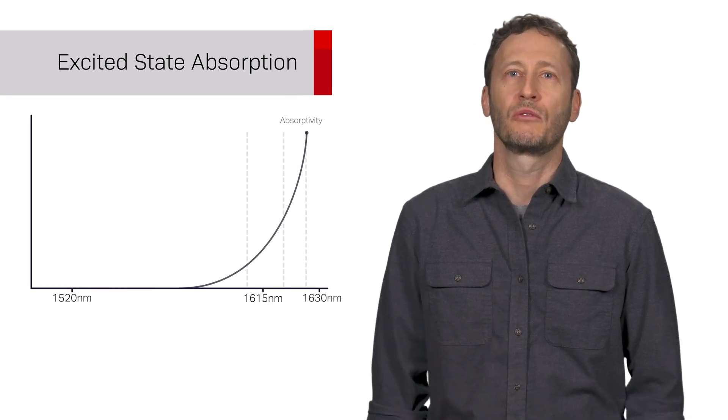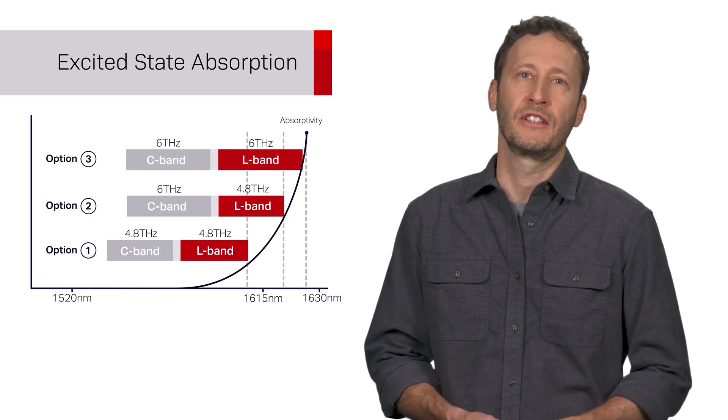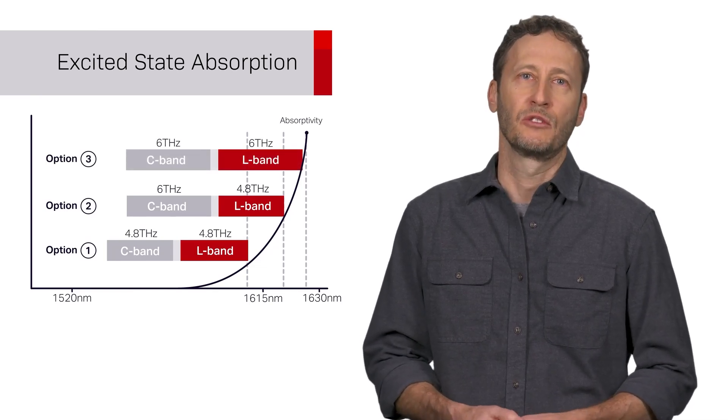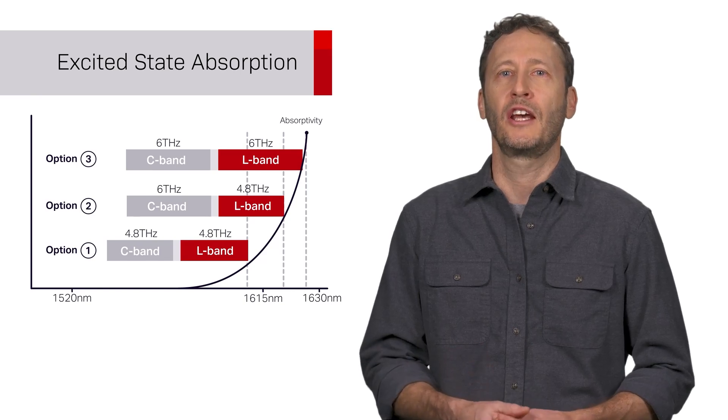What spoils the party is an effect called excited state absorption. This is when signal photons created by the amplification process get reabsorbed into the doped fiber before they get a chance to leave the amplifier. This effect is wavelength dependent, and it gets very pronounced around 1615 nm and beyond.